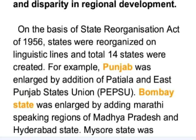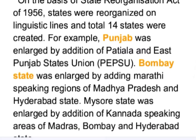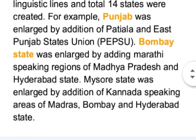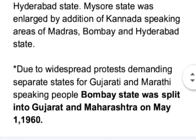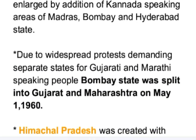For example, Punjab was enlarged by the addition of Patiala and East Punjab State Union. Bombay State was enlarged by adding Marathi-speaking regions of Madhya Pradesh and Hyderabad State. Mysore State was enlarged by the addition of Kannada-speaking areas of Madras, Bombay, and Hyderabad State. Due to widespread protests demanding separate states for Gujarati and Marathi-speaking people, Bombay State was split into Gujarat and Maharashtra on May 1, 1960.